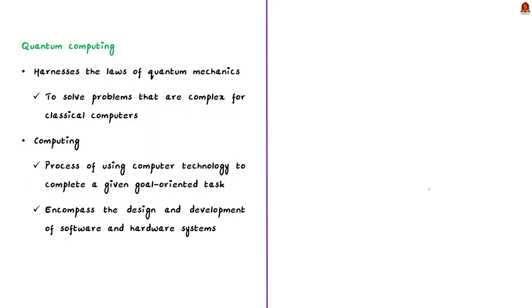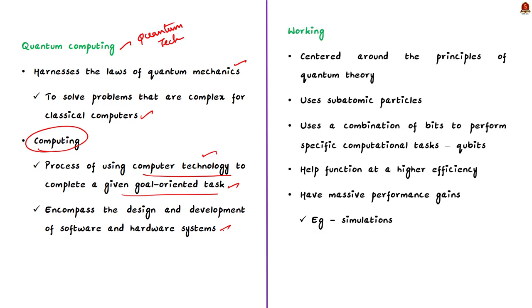Lastly, let us come to the quantum computing. As we already saw, quantum computing is a quantum technology. It is a rapidly emerging technology that harnesses the laws of quantum mechanics to solve problems that are too complex for classical computers. First of all, what is computing? Computing is the process of using computer technology to complete a given goal-oriented task.